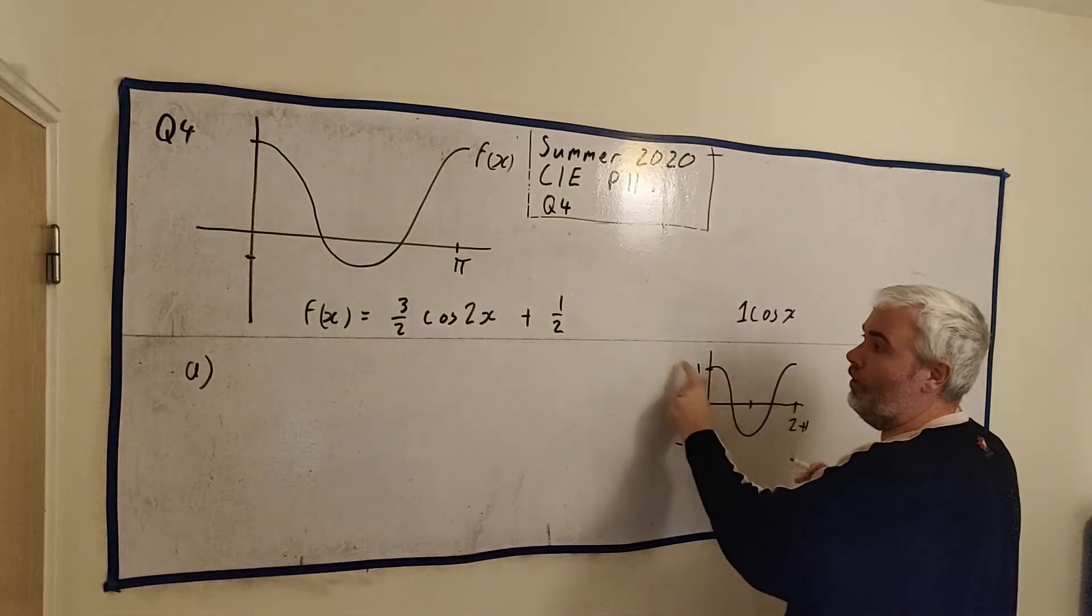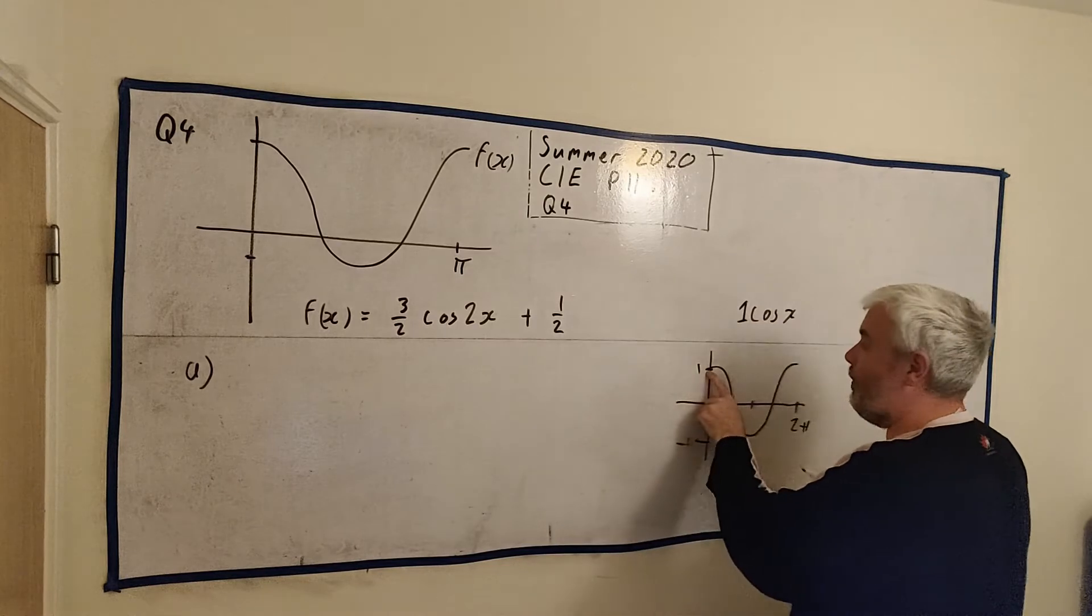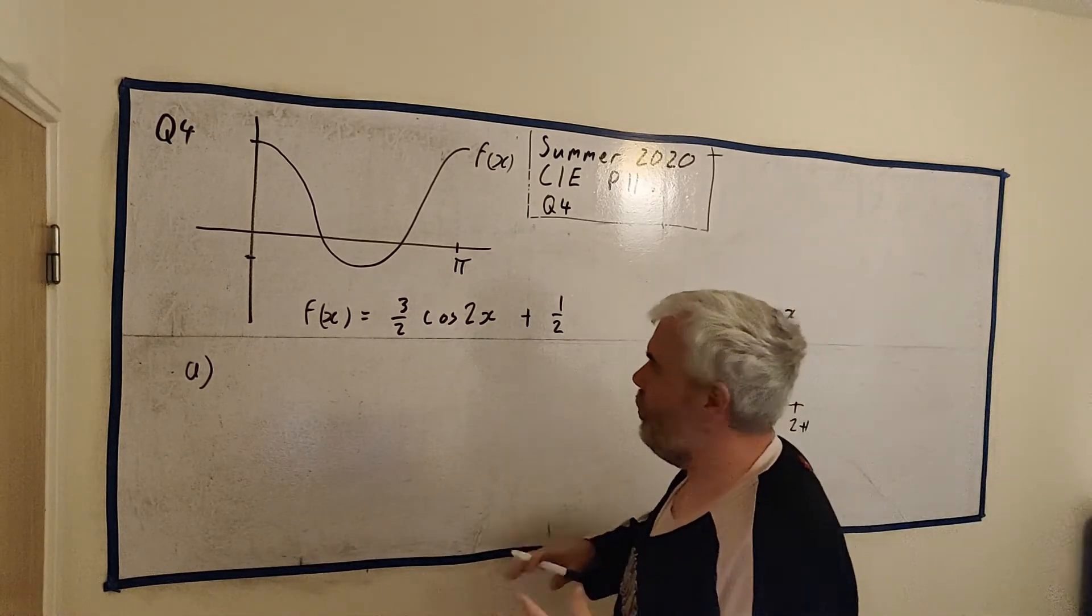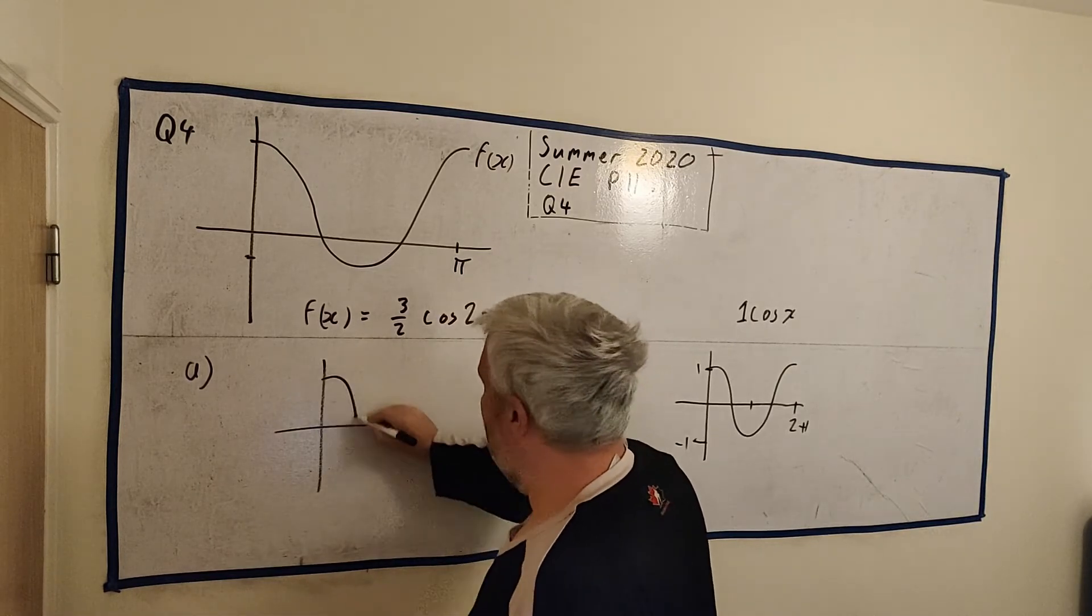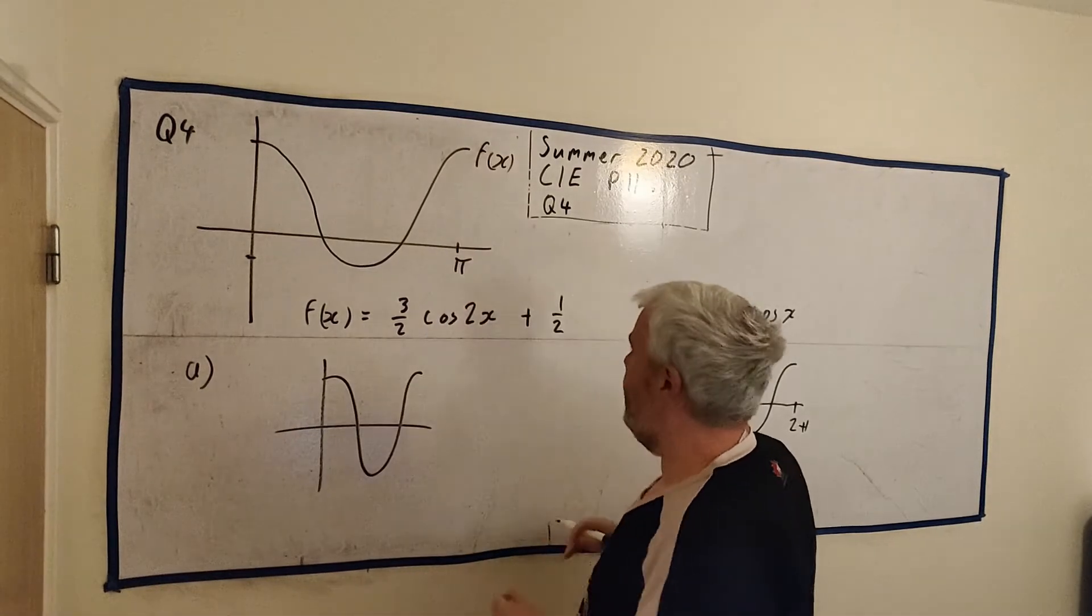So if you think multiplied by 1, 3 over 2 multiplied by 1, it becomes 3 over 2. So let me draw another picture, and this guy again, without the half.